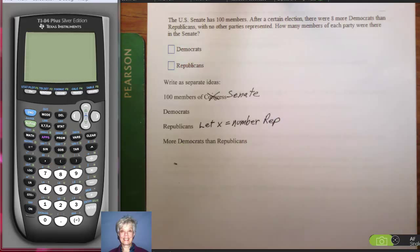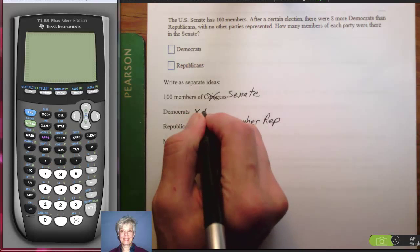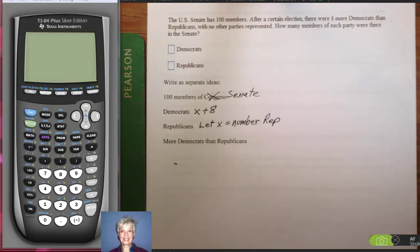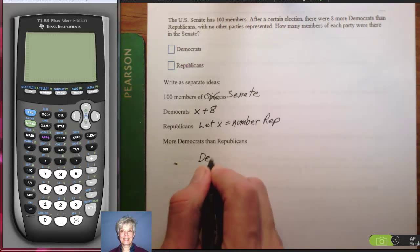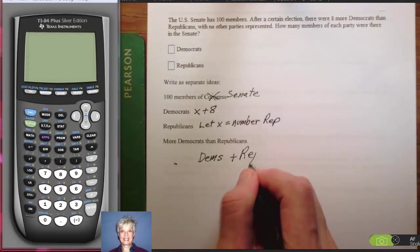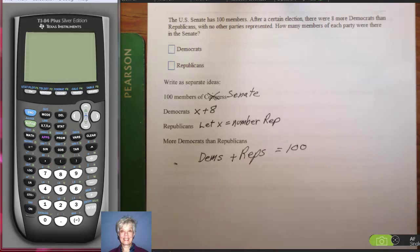Well, if there are X Republicans in the Senate this particular year and there are eight more Democrats than Republicans, there must be X plus eight Democrats. And together the Democrats, the Dems, and the Reps equal 100. This is not that hard, is it?